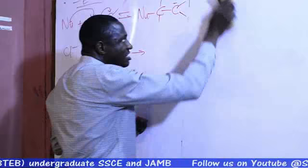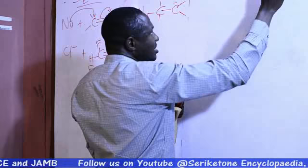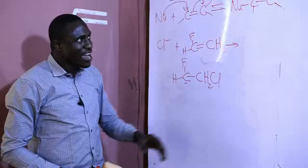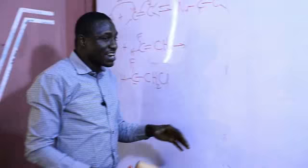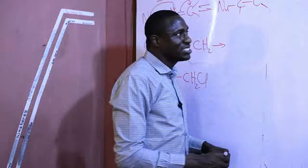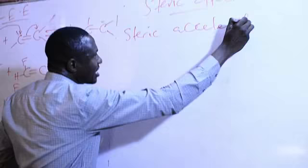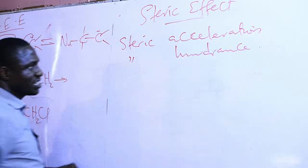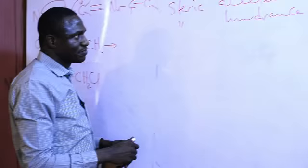Another effect is what we refer to as steric effect. Steric effect usually occurs when there is a bulky group attached to the point of reaction — the reaction site — of an organic compound. That bulky group may either increase the reactivity of that compound, which we refer to as steric acceleration, or reduce its reactivity, which we refer to as steric hindrance.